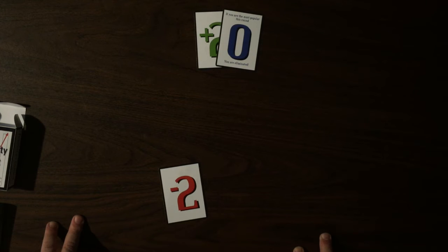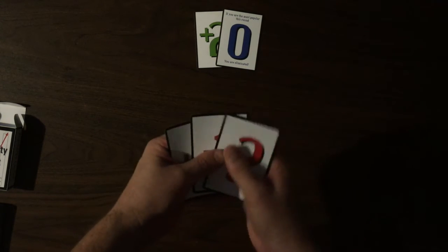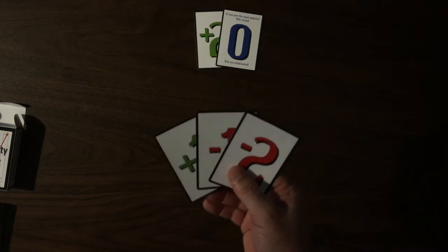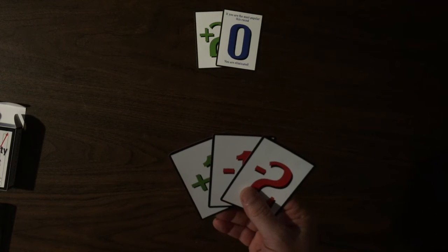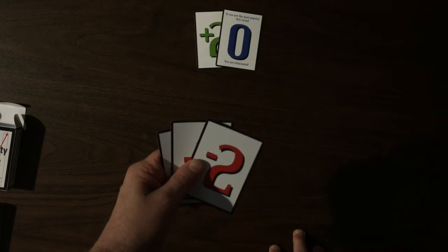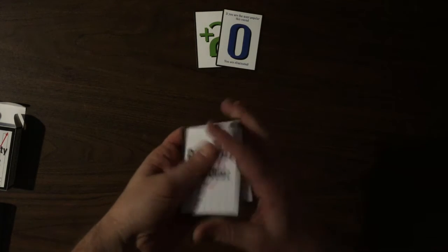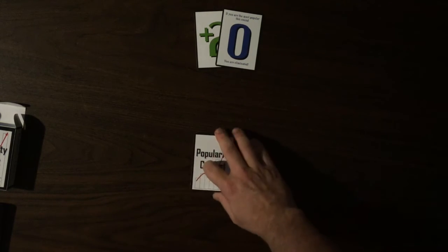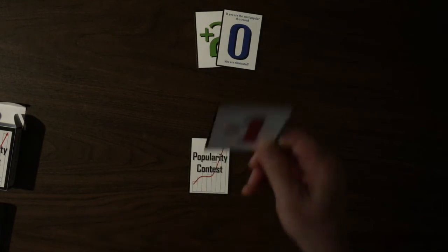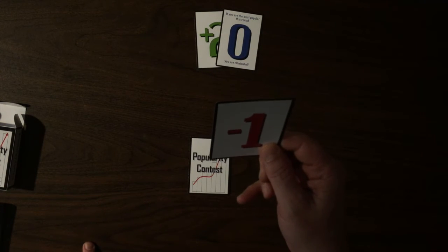Then we move on to the Gather Phase. During the Gather Phase, we gather up all the cards that we received during our turn and those cards become our new hand. If we were eliminated during the Evaluation Phase, then we would take our hand, shuffle our cards, and select one card at random to play during the next Popularity Phase.